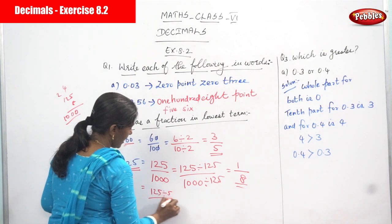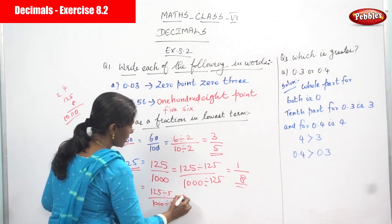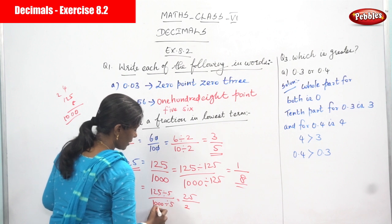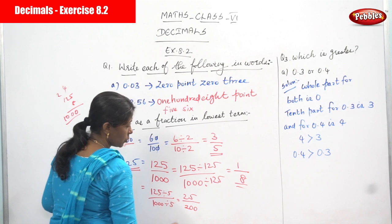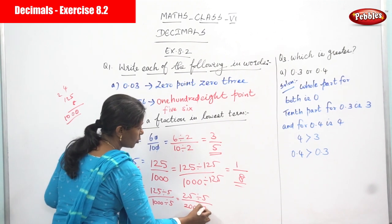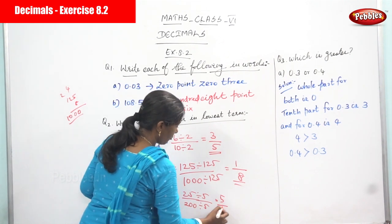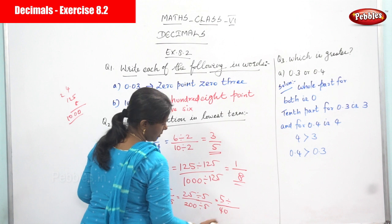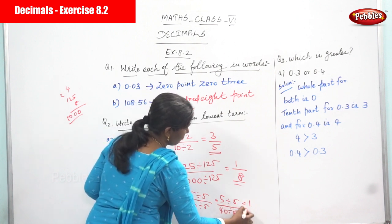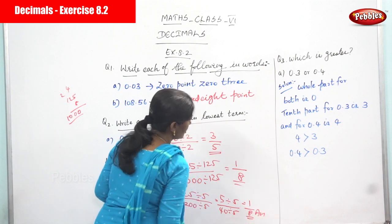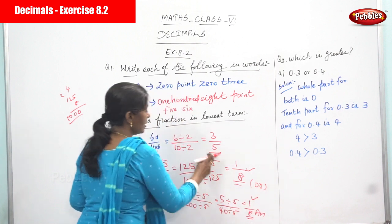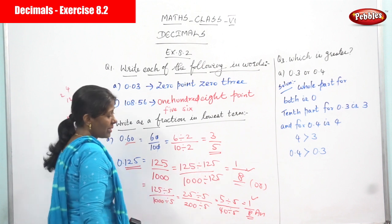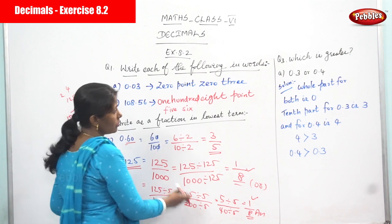Alternatively, you can simplify step by step: 125 divided by 5 gives 25, and 1000 divided by 5 gives 200. Then 25 divided by 5 gives 5, and 200 divided by 5 gives 40. Then 5 divided by 5 gives 1, and 40 divided by 5 gives 8. So again 1 by 8. You can choose whichever method is convenient for you.